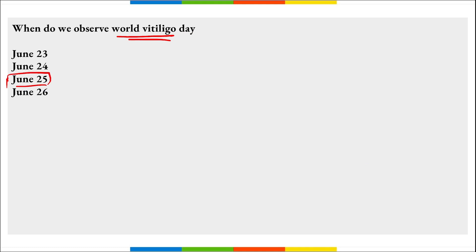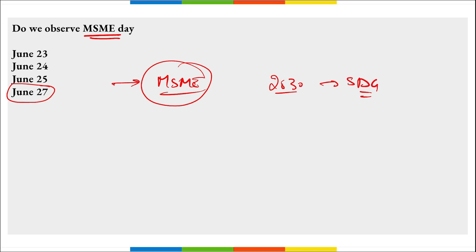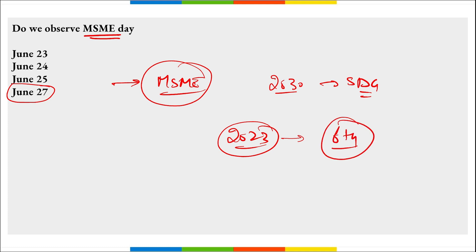World Vitiligo Day is observed on 25th of June to raise awareness about vitiligo — a chronic condition that causes loss of pigmentation and patches of skin. MSME Day is observed globally on 27th of June to promote the contribution of MSMEs in achieving the 2030 Agenda of Sustainable Development Goals. In 2023 it was the sixth anniversary of MSME Day.